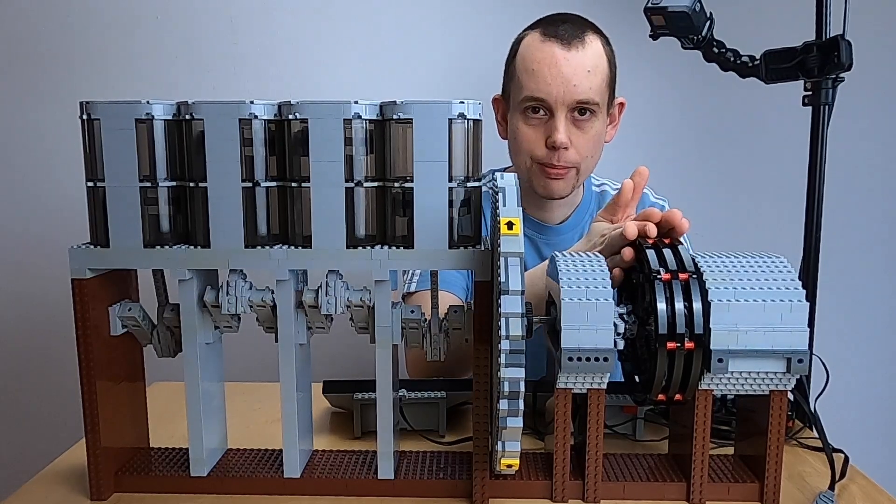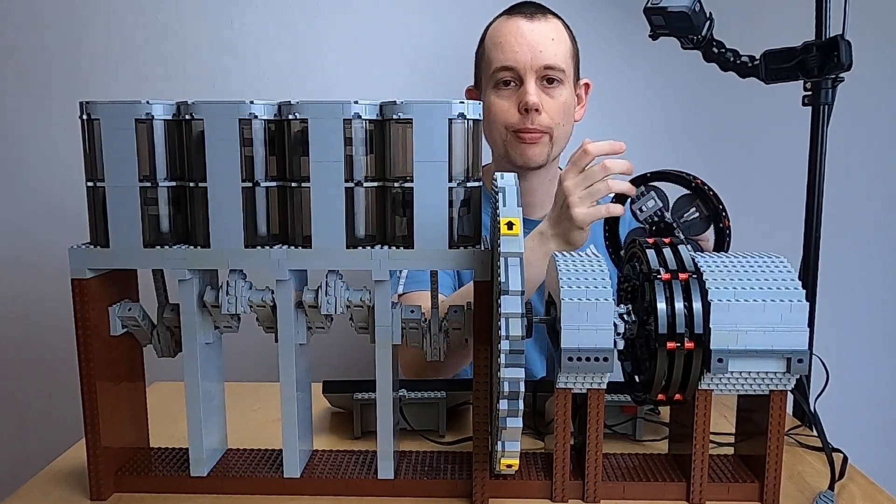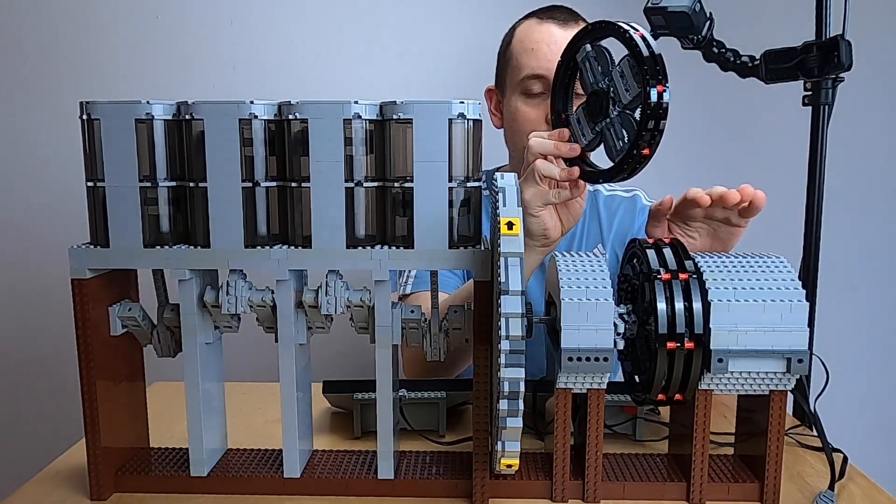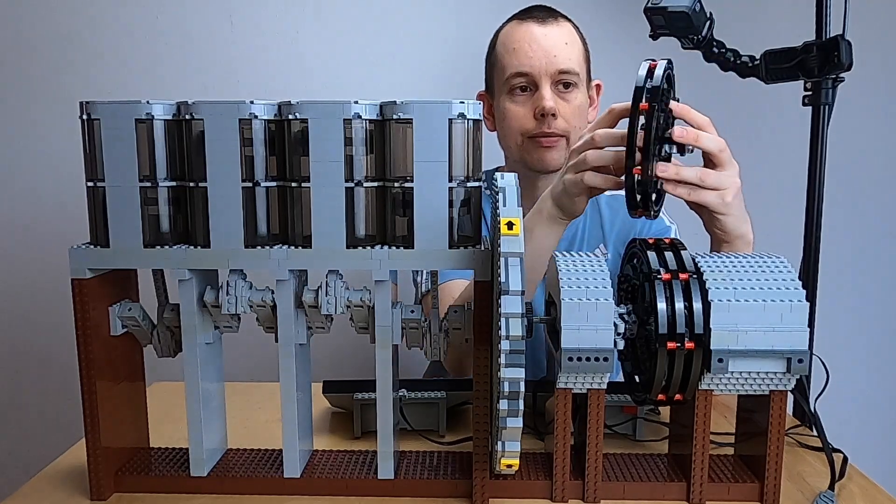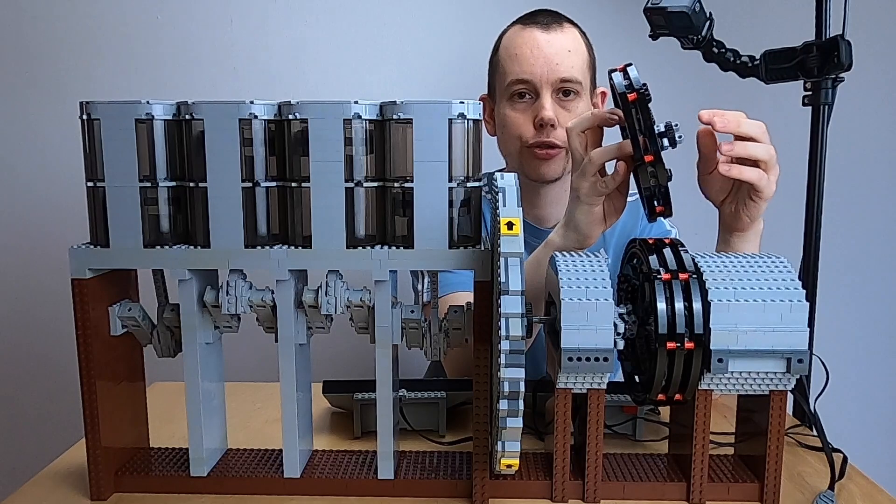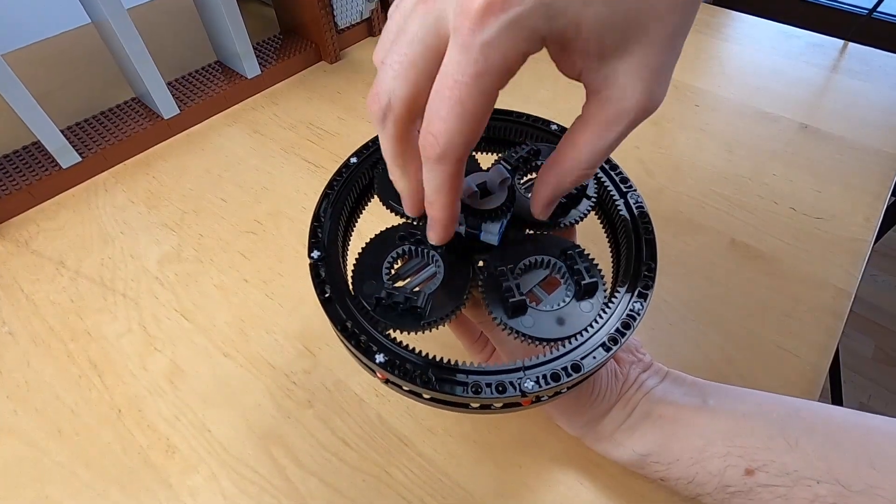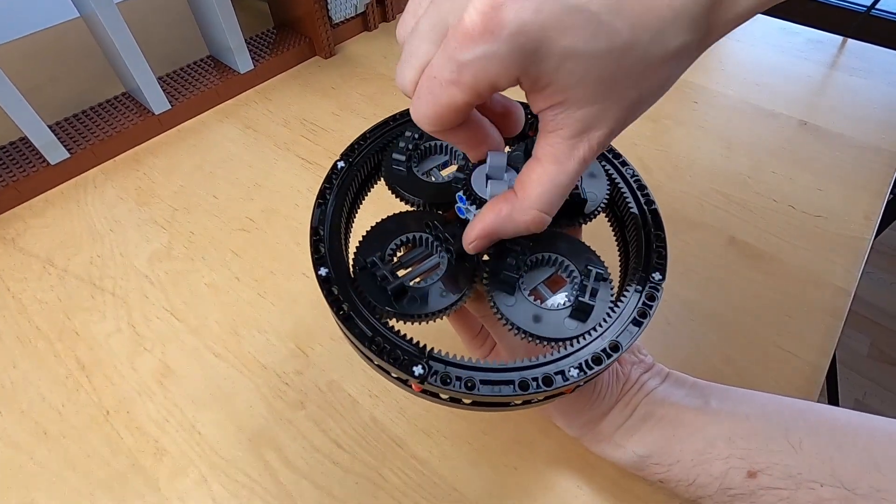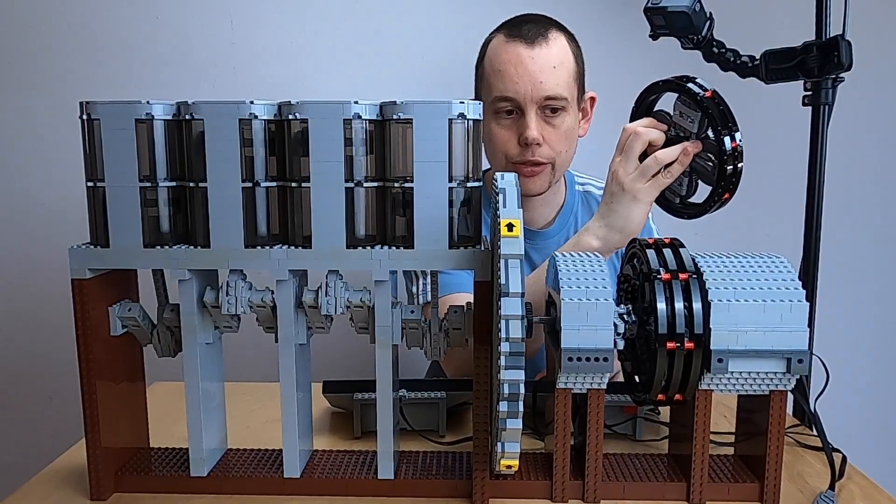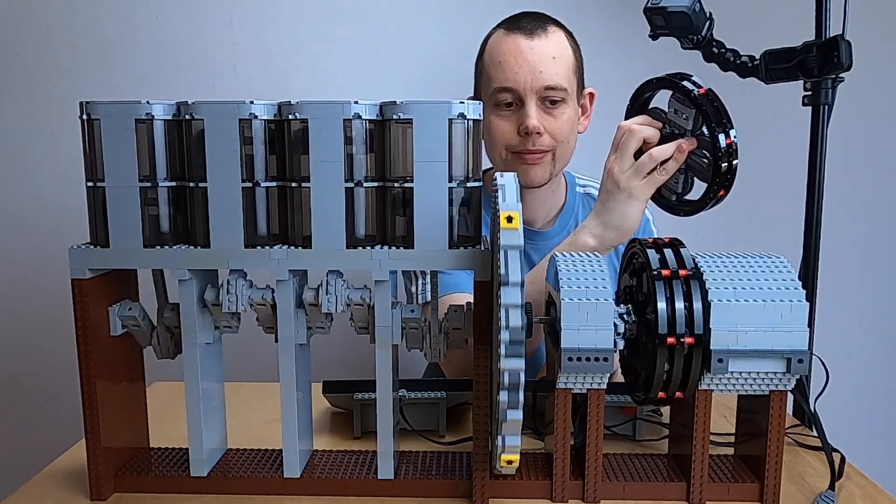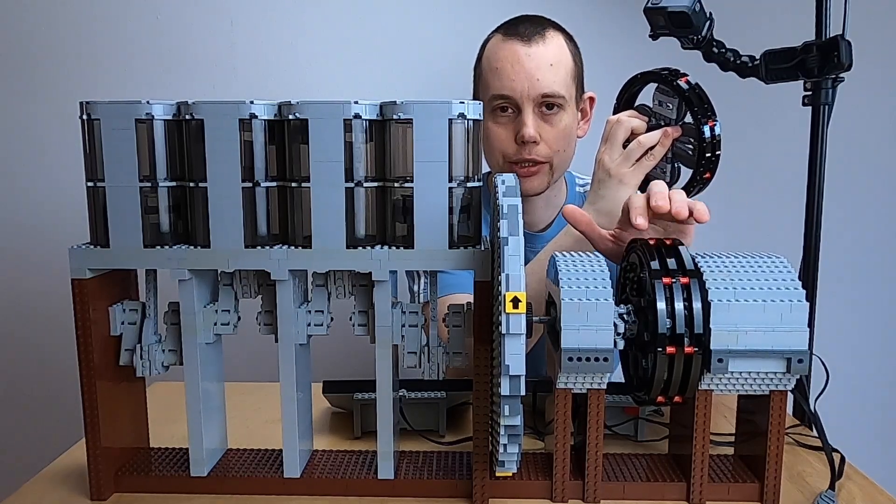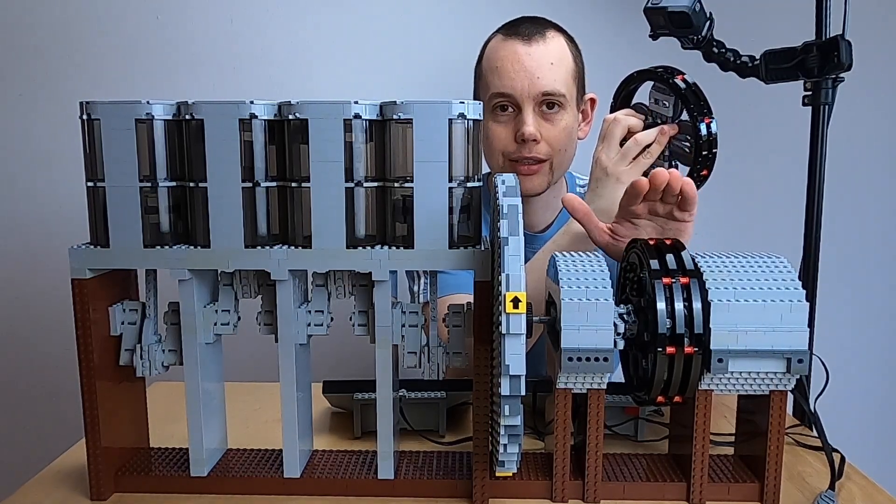In the middle we have the power split device, really consisting of two planetary gear sets. On one side with MG2 we are having the planetary carriers fixed. MG2 is running the sun gear, and that way we have a good gear reduction to the ring gear. When I'm running MG2 you will always see the wheels are running, because the power split device here is going directly to the wheels.